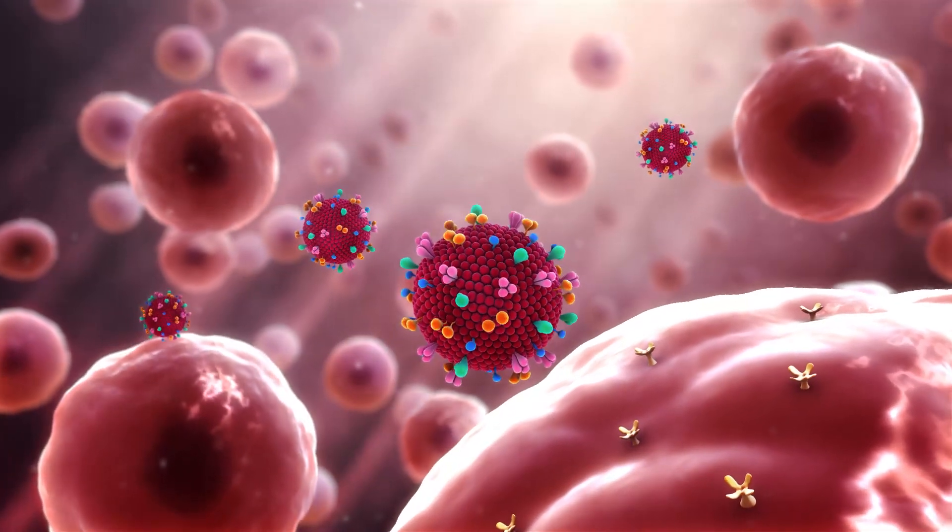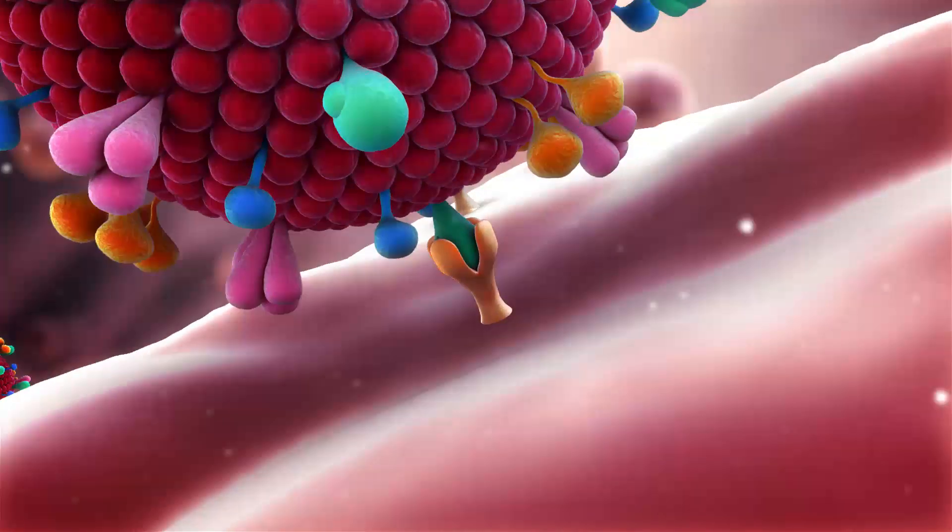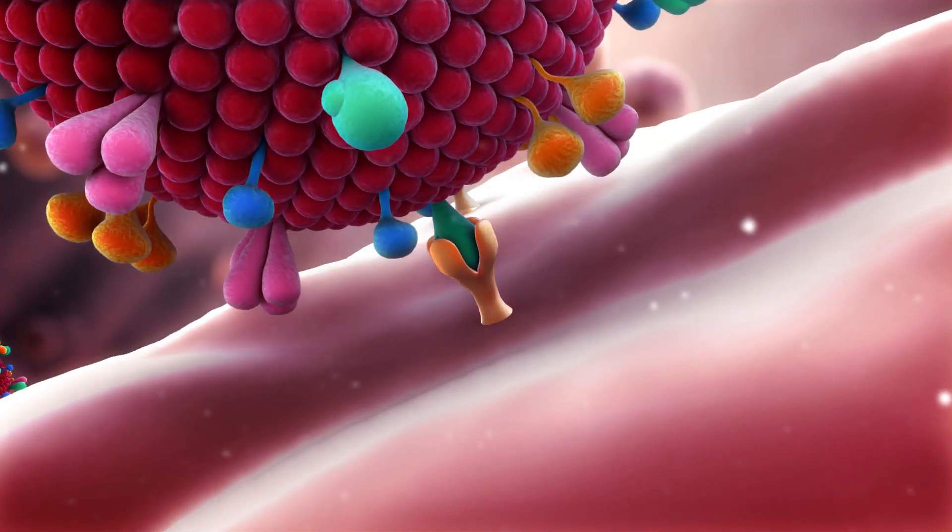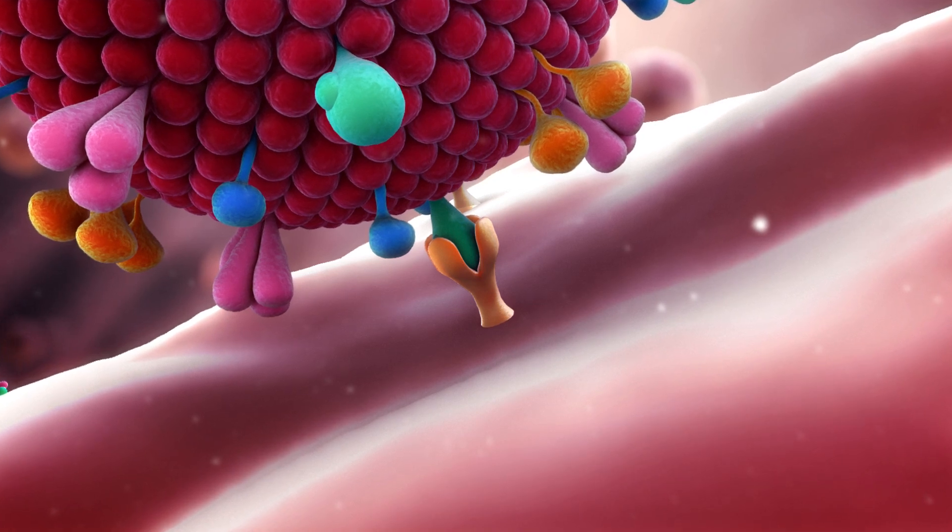The large S-glycoproteins are used by the virus to gain entry to human cells. They attach to receptors on the cell membrane. This binding convinces the cell that the virion is not a threat, allowing the virus entry.